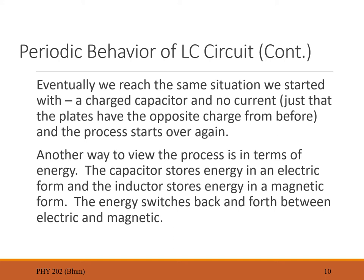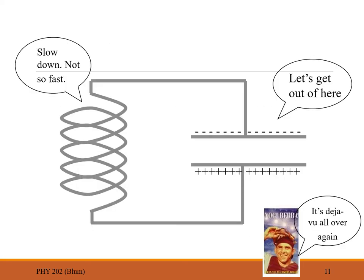There's another way of viewing this process. The capacitor stores energy in electric form and the inductor stores energy in magnetic form. The oscillatory behavior is simply this energy passing back and forth between the two forms — electric, then magnetic, then electric, then magnetic — so the LC circuit just sloshes back and forth continuously.